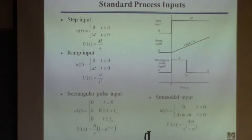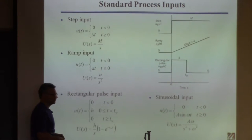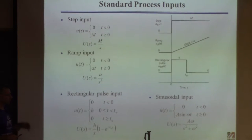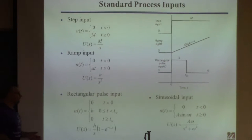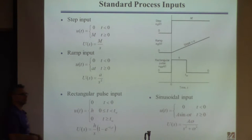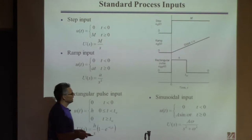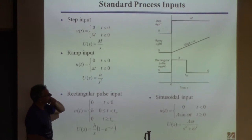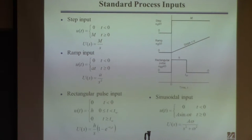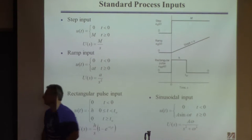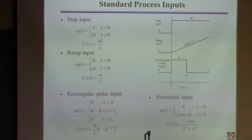I won't fully derive this one, but I'll explain it. The Laplace transform of that input has h as the magnitude and tw as where the input changes back to 0. The way I would derive it is by expressing this input as the sum of two inputs. If you don't know the Laplace transform of a composite input, break it into the sum of two inputs you do know the Laplace transform for.